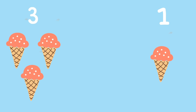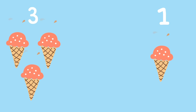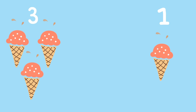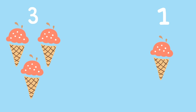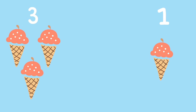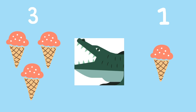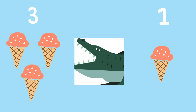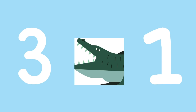Here we have one ice cream and we have three ice creams. Now I want you to tell me which one will Mr. Crocodile choose — one ice cream or three ice creams? Mr. Crocodile will choose three ice creams because, as we know, Mr. Crocodile is always very hungry and he likes to eat a lot. So Mr. Crocodile eats three rather than one.